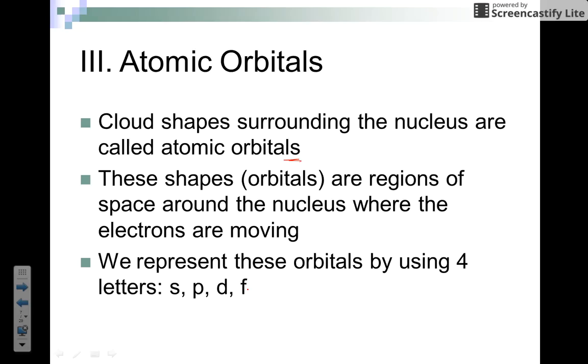I think of these orbitals like the houses that electrons live in. Just like we all live in different houses and our houses look different, in this electron neighborhood there are only four different shapes the houses will take: one is S, one is P, one is D, and one is F.